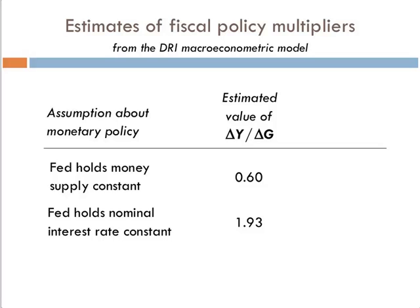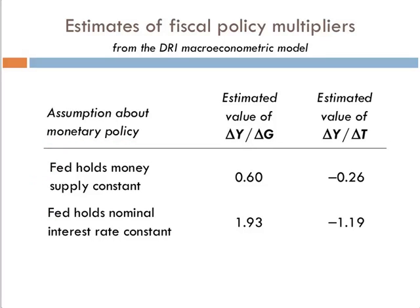Looking at estimates of fiscal policy multipliers: if the Fed holds the money supply constant, the multiplier on delta Y over delta G is less than one — income increases about 60 cents for every dollar of government spending. If the Fed holds nominal interest rates constant, the multiplier is almost two. That makes sense: holding money supply constant gives a small increase; holding the interest rate constant gives a big increase. The tax multipliers are smaller in both cases because the tax multiplier is inherently smaller.